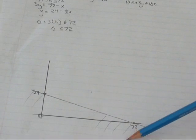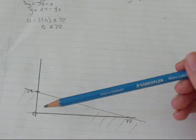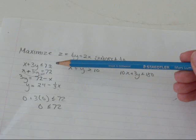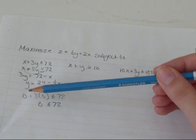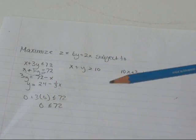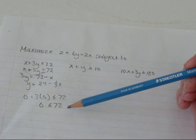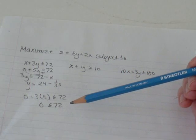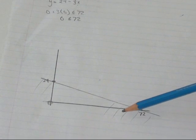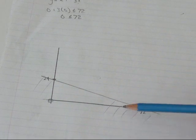And then what I did to find out which side of the line I need to shade, I picked a point that's not on my line. I picked the origin (0, 0) and I plugged that into my original inequality. I got 0 plus 3 times 0. Is that less than or equal to 72? It definitely is less than or equal to 72. So then I shade the side of my line where my point occurs. So I've shaded this side of my line.